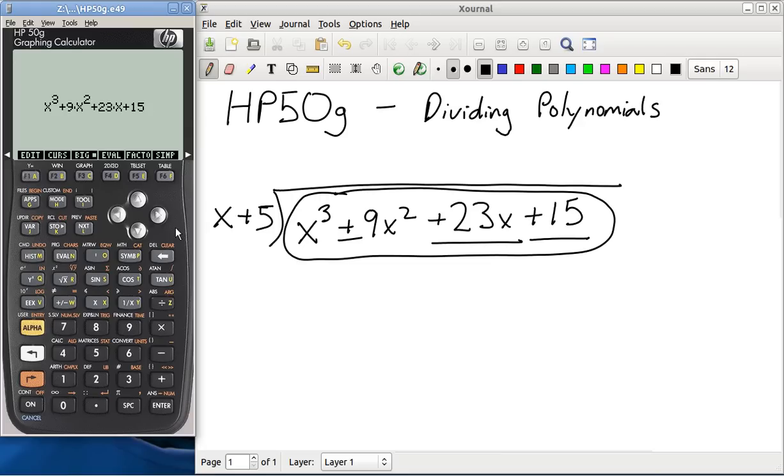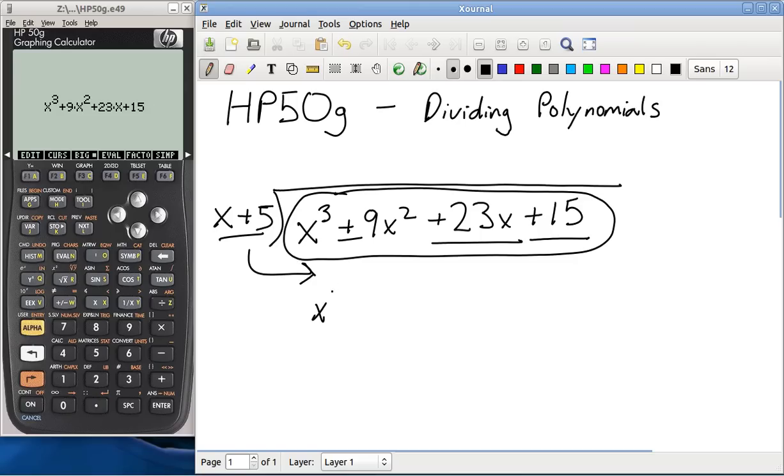Now we want to put x plus 5 under this, so that we have x cubed plus 9x squared plus 23x plus 15, all over top of x plus 5.